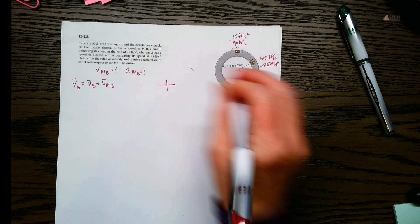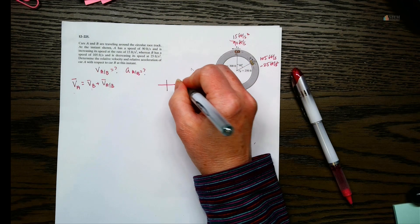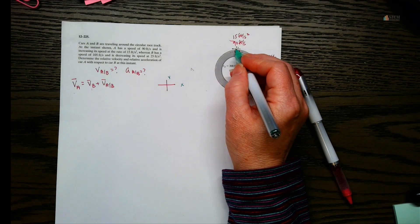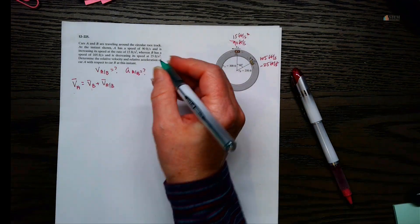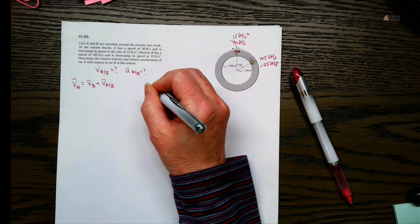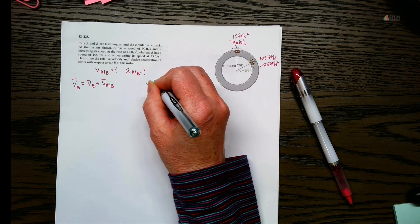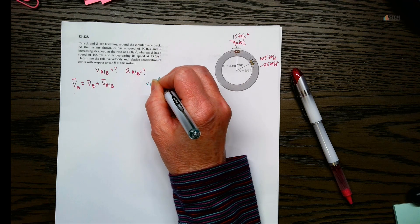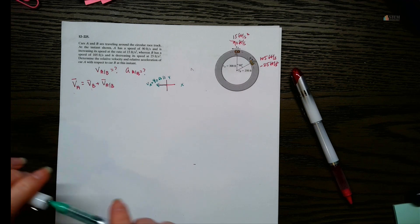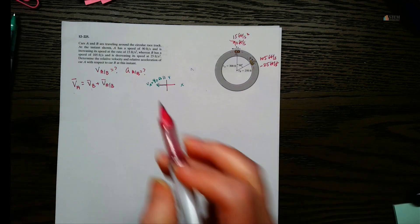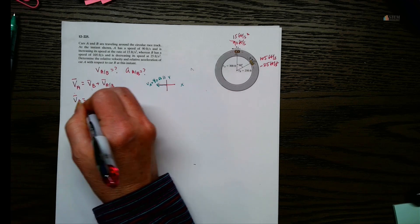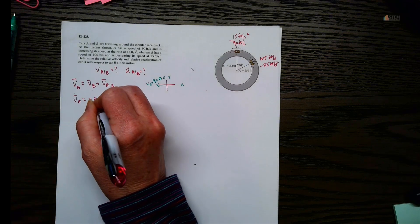Let's draw a picture so we know where everything is — X and Y axes. Looking at A: it's going to the left, and notice that is horizontal. So V_A is going to be negative 90i feet per second, since we're going in the left direction.